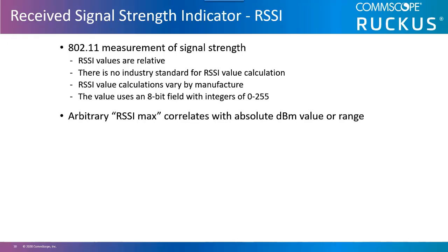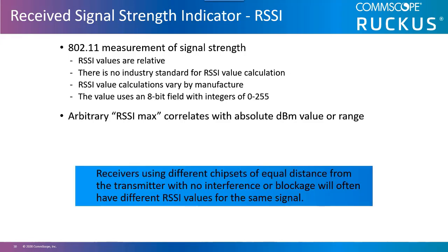The received signal strength indicator value, or RSSI, is a relative value of the strength and quality of an RF signal being received by an antenna. There is no industry standard for calculating the RSSI value — each chipset calculates it as it was designed to by the manufacturer. Two radios at the same distance from the transmitter in the same RF environment may display different RSSI values for the exact same signal. The 802.11 standard states that RSSI is intended to be used in a relative manner and that absolute accuracy of the RSSI reading is not specified.